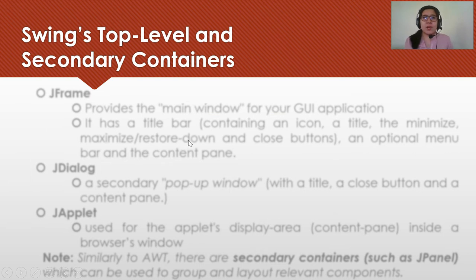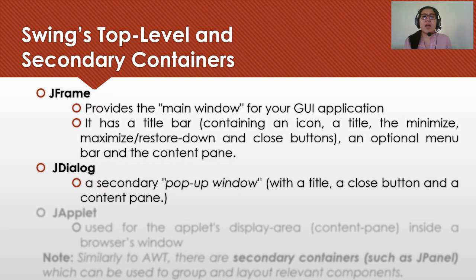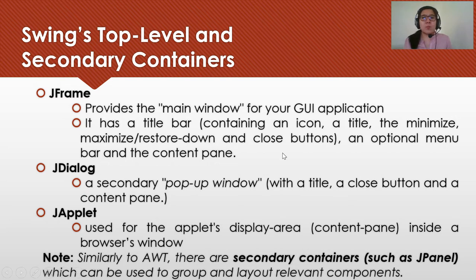We also have SWING's top-level and secondary containers. For top-level, we have J-Frame, which provides the main window for your GUI application, consisting of a title bar, an optional menu bar, and the content pane. We also have J-Dialog, which is a secondary pop-up window, and J-Applet, which is used for Applet's display area inside a browser's window. For secondary containers, similarly to AWT, we have J-Panel, which can be used to group and lay out relevant components.